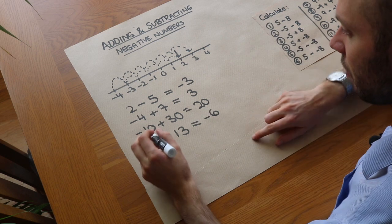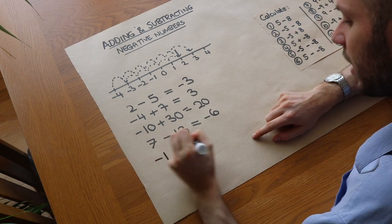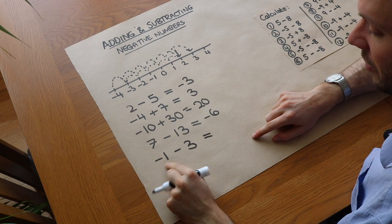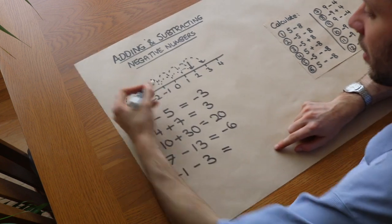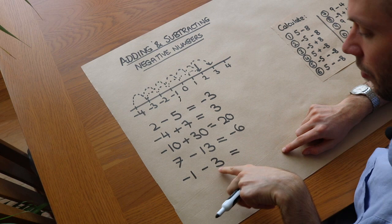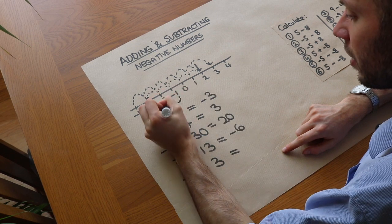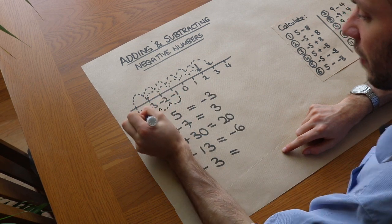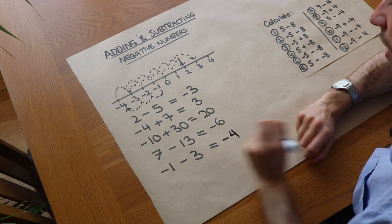What about if you had minus one and you subtract three? We're starting at a negative number and then subtracting. So we're at minus one and we move down three positions — one, two, three — and that gets us down to minus four.